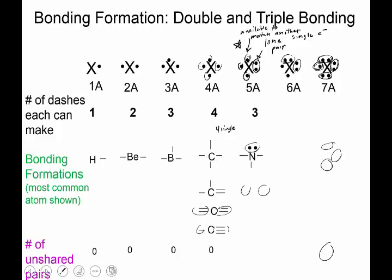Nitrogen is going to have three dashes. It can do three singles, a double and a single, or a triple bond. Oxygen can have two singles or a double. So the HONK Rule: one dash for H, two dashes for O, nitrogen makes three in one of these formations, and carbon does one of these formations — each one has four dashes.